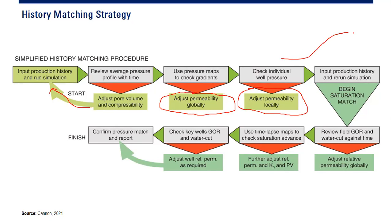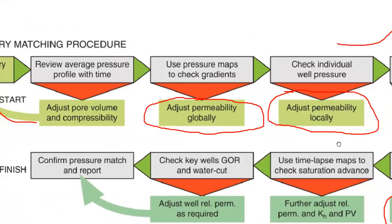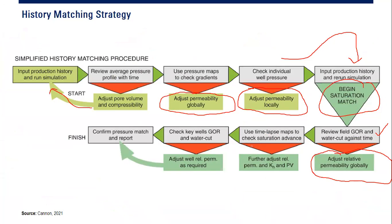Once pressure matching is complete, input production history and rerun the simulation to begin saturation matching. We review the field GOR and water cut versus time — if it doesn't match, we adjust relative permeability globally. Be careful: for pressure we adjust absolute permeability, but for saturation we adjust relative permeability. We use time-lapse maps to check saturation advance, further adjust relative permeability and horizontal permeability, check key wells' GOR and water cut, and adjust again if needed.